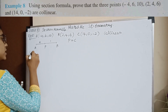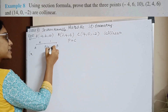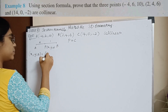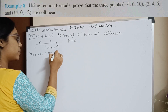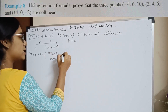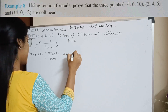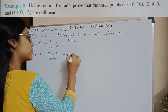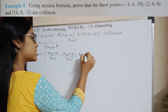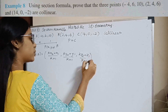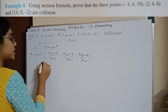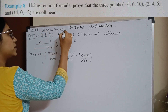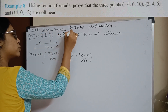By using the formula that we just learned, the coordinates of P, I am going to take them as X, Y, and Z. So it will be: X = (KX2 + X1) / (K + 1), Y = (KY2 + Y1) / (K + 1), Z = (KZ2 + Z1) / (K + 1). So these will be my coordinates of P. So what is my X1, Y1, Z1, X2, Y2, Z2?